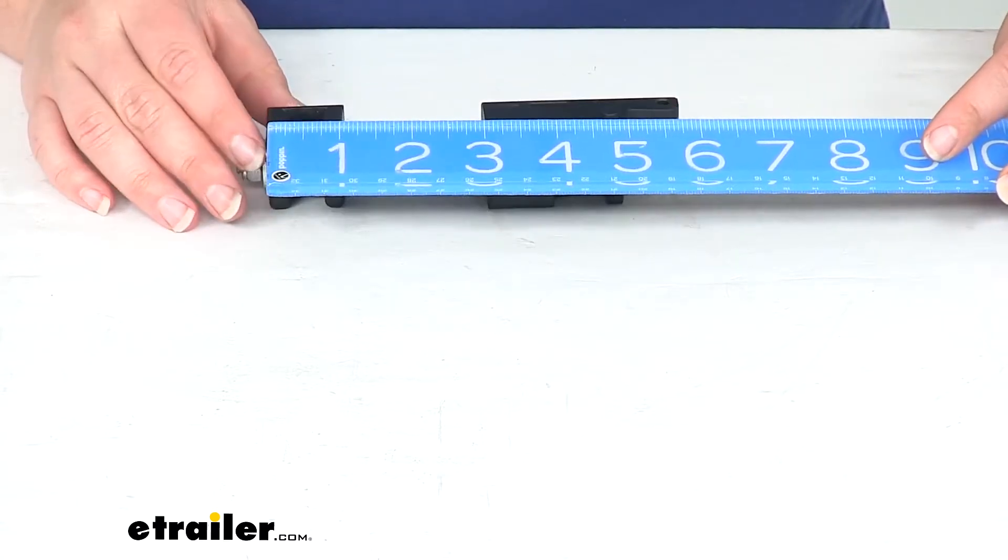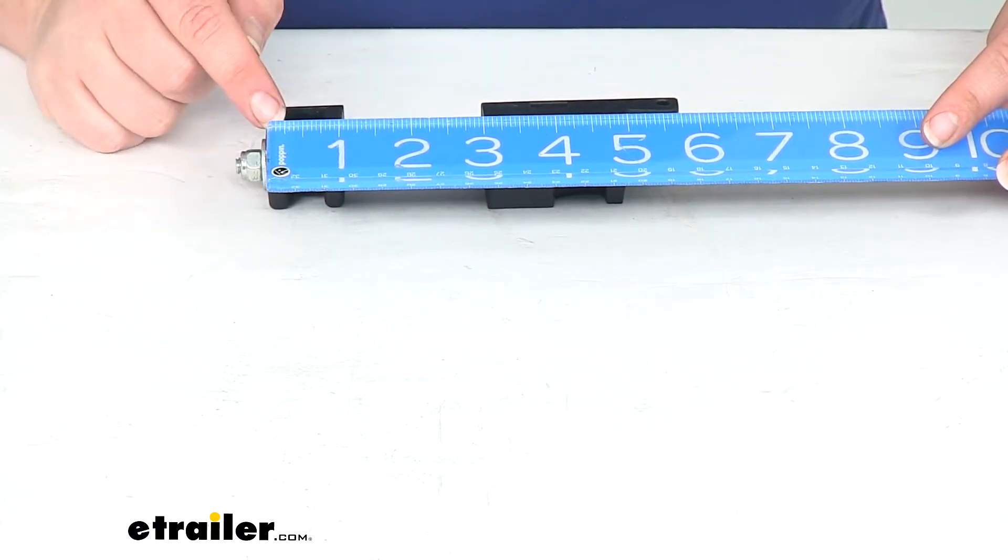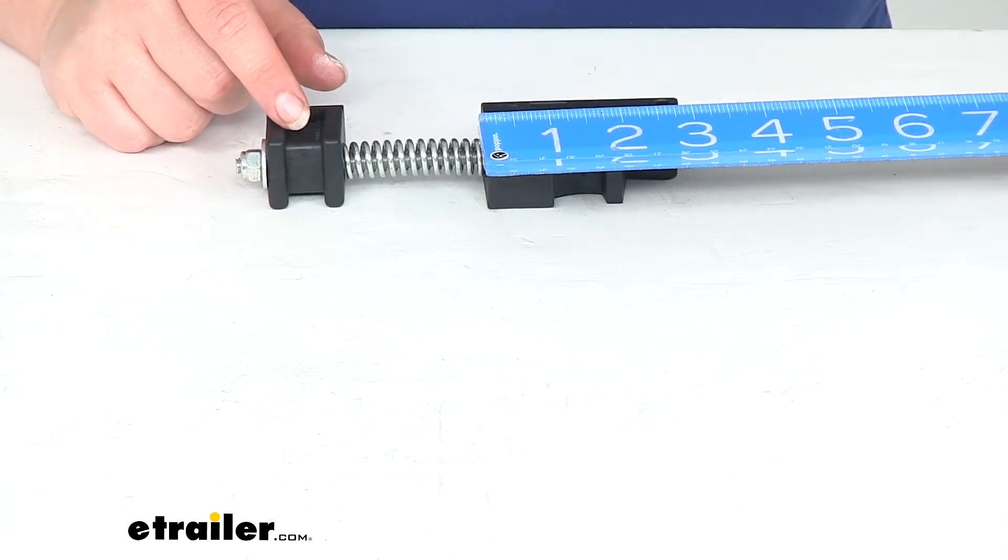And then going from the end of one bracket to the end of the other is about six inches. This first one is about an inch wide. Our second one is about three inches.